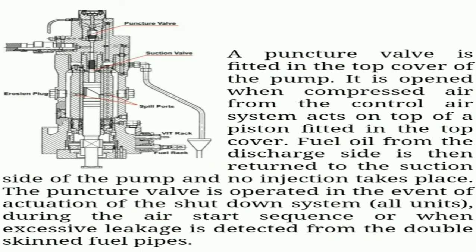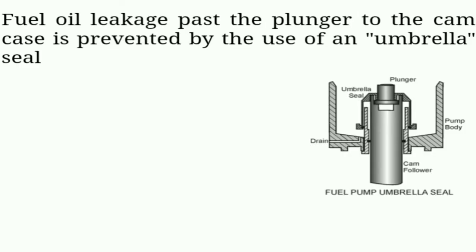The puncture valve is opened when compressed air from the control air system acts on top of a piston fitted in the top cover. Fuel oil from the discharge side is then returned to the suction side of the pump and no injection takes place. The puncture valve is operated in the event of actuation of the shutdown system — during the air start sequence or when excessive leakage is detected from the double-skinned fuel pipes. Fuel oil leakage past the plunger into the cam case is prevented by the use of an umbrella seat on the fuel pump.